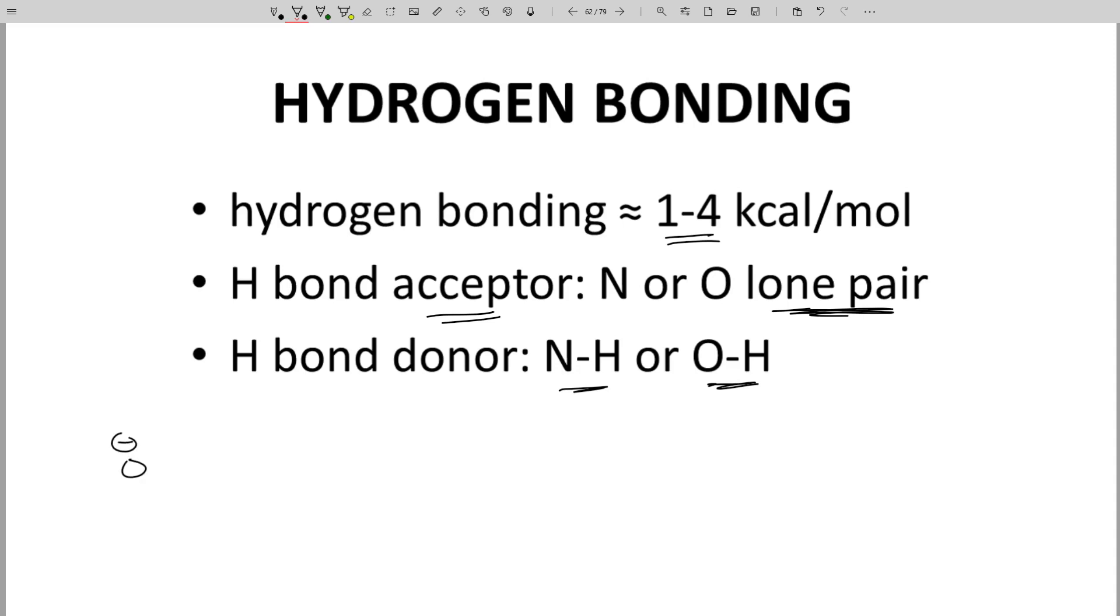An O- interacting with an NH+ is a very strong hydrogen bond because there's also an electrostatic interaction. A hydrogen bond between two neutral alcohols is not as strong.